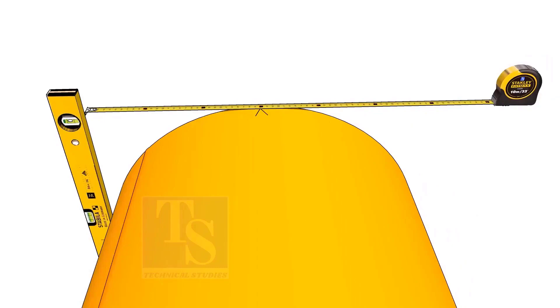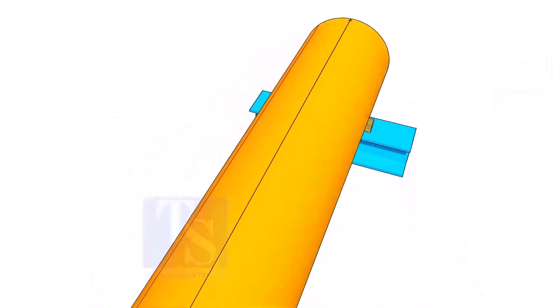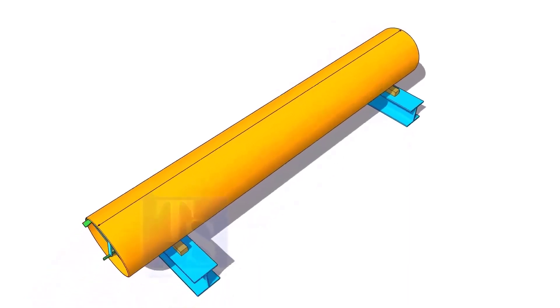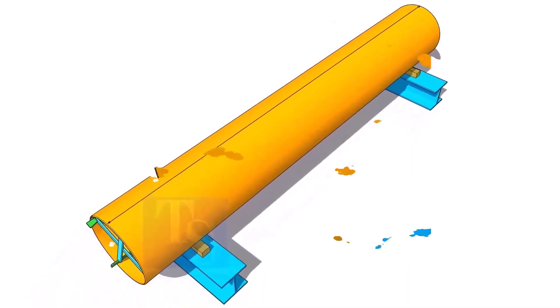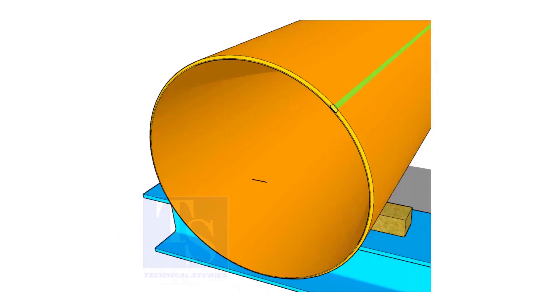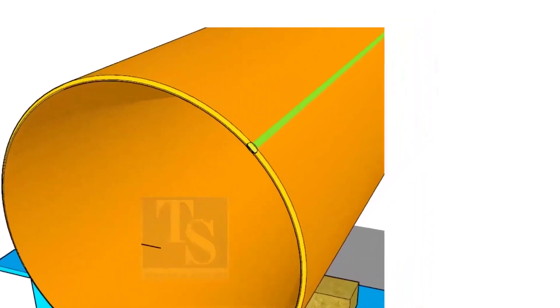Draw a line connecting these marks. If the pipe is welded, probably you can choose the center of the welding as center of the pipe. But you need to check and make sure.